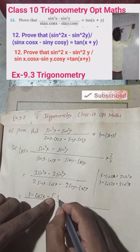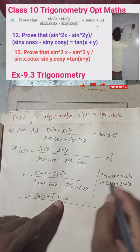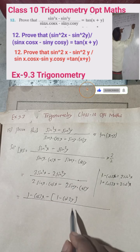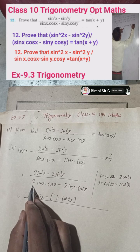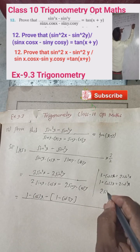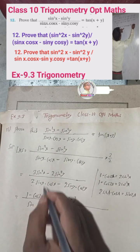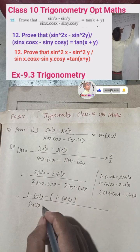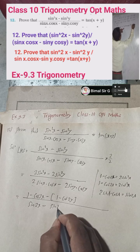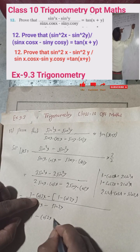In the denominator, the formula for 2sinx·cosx = sin2x and similarly 2siny·cosy = sin2y. So the denominator becomes sin2x − sin2y.